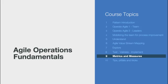Hi and welcome to Module 9, Metrics and Measures of the Agile Operations Fundamentals course. In this module we're going to talk about what are the best metrics for an operations team and what are the key factors that you have to keep in mind when measuring for continuous improvement.